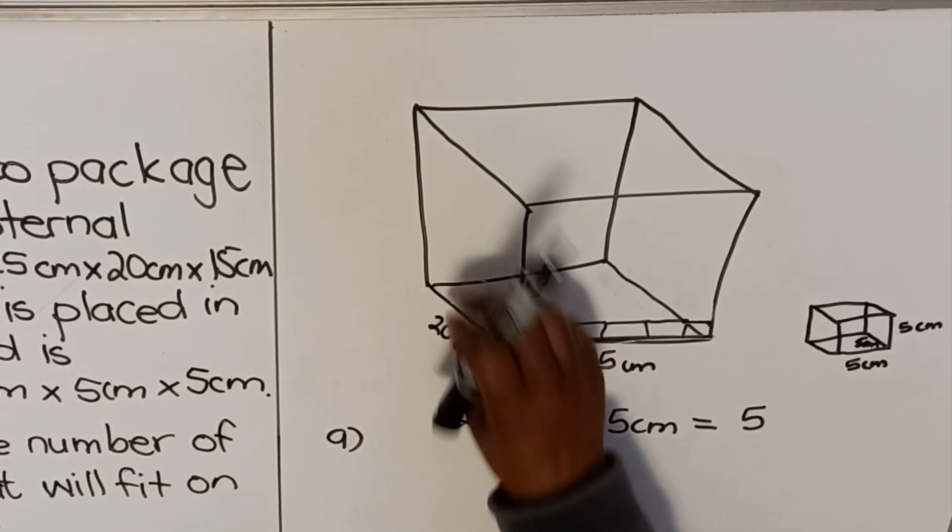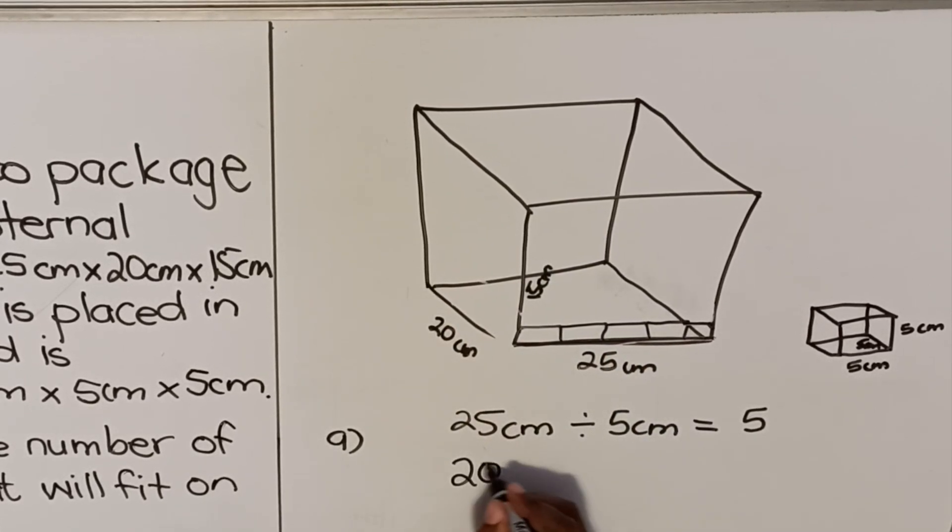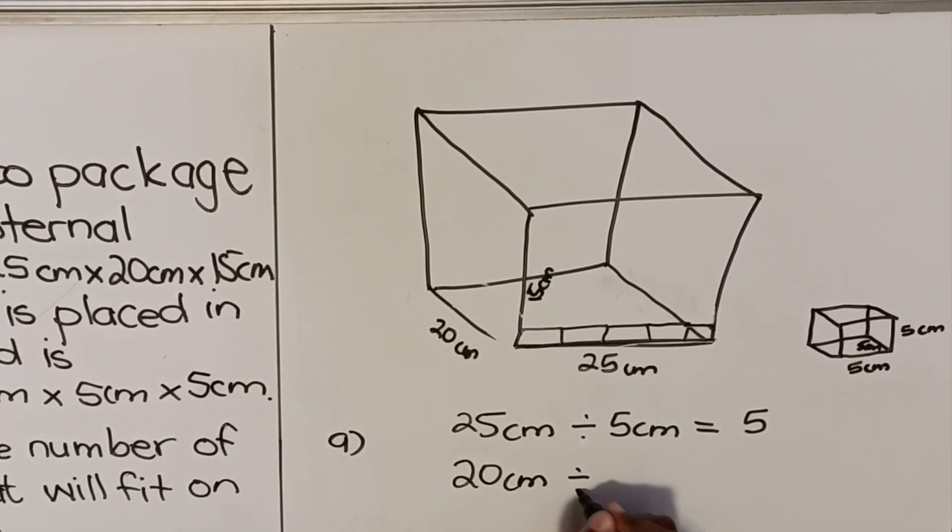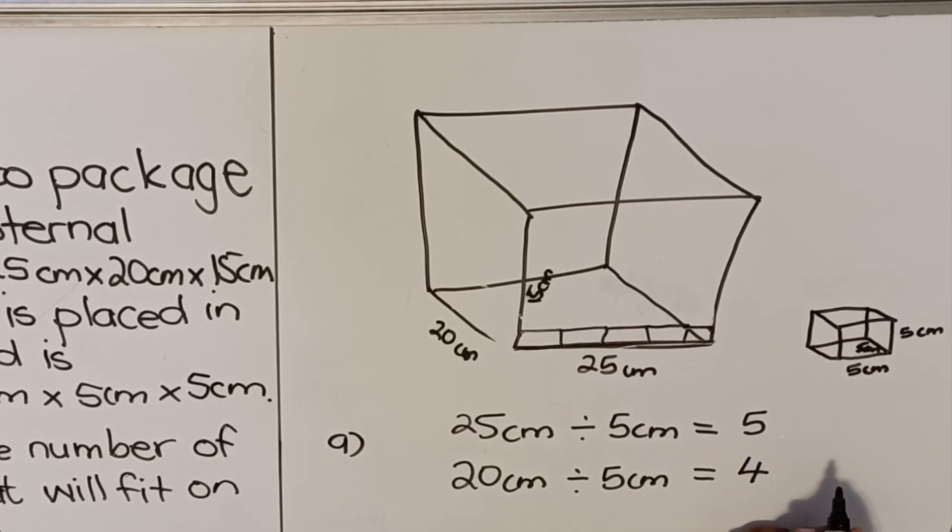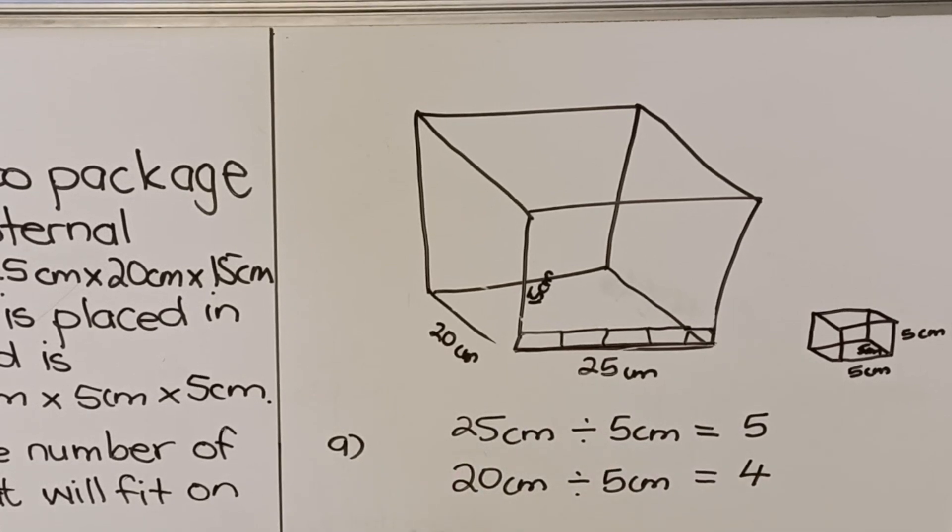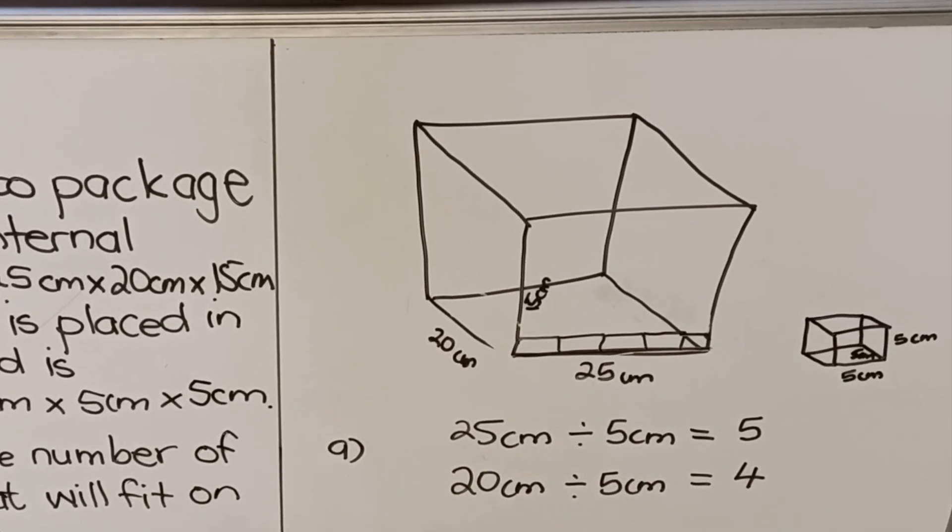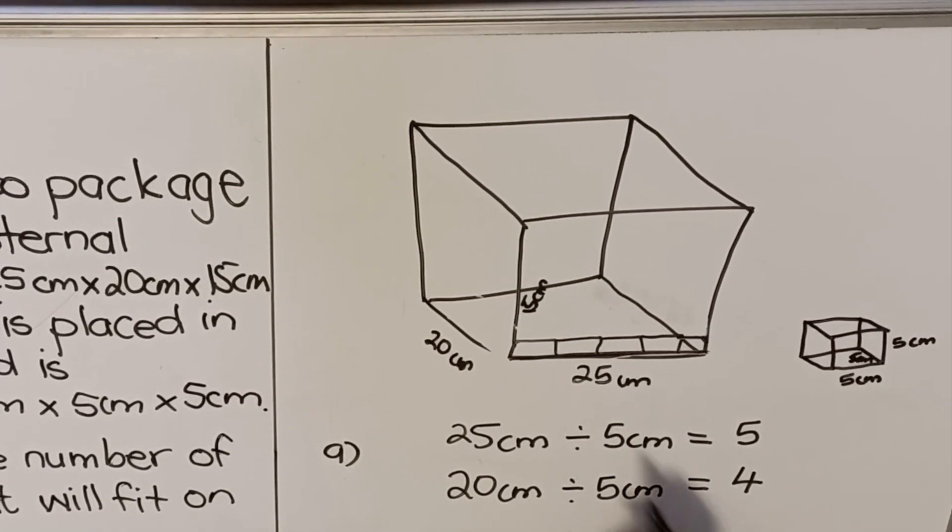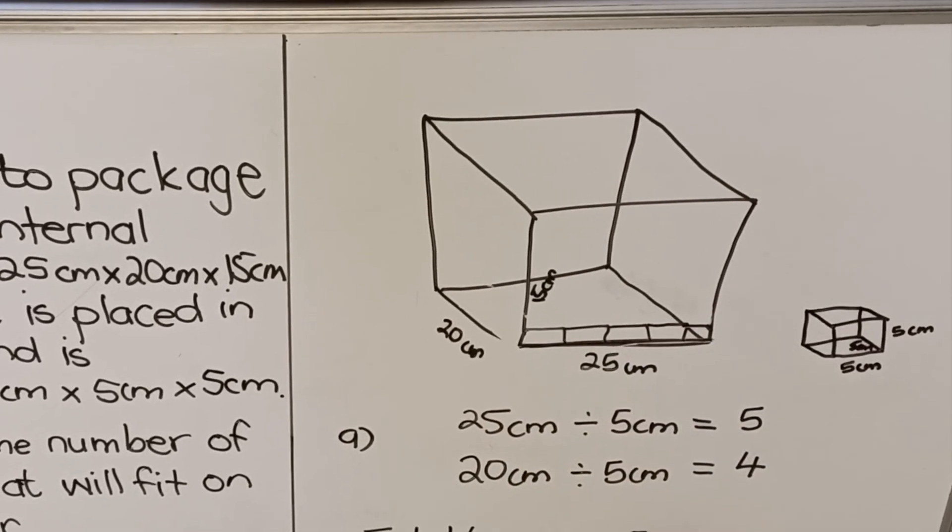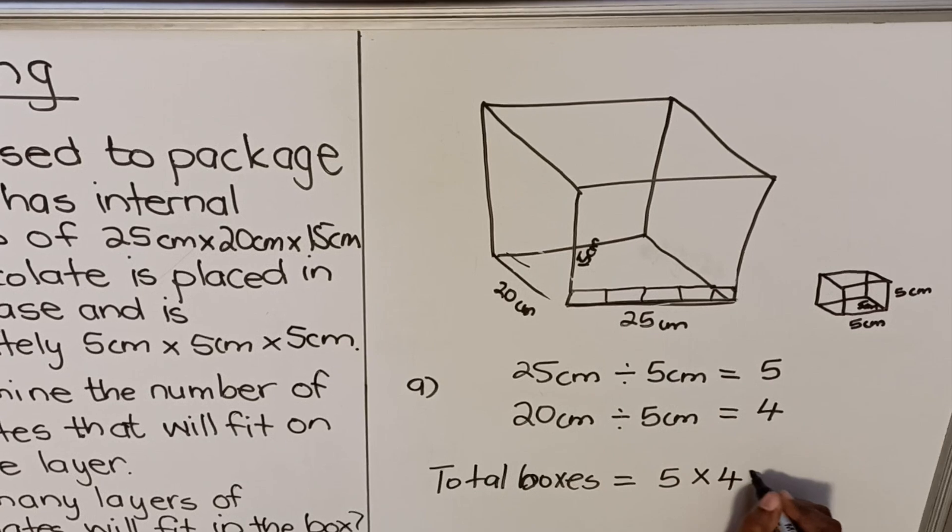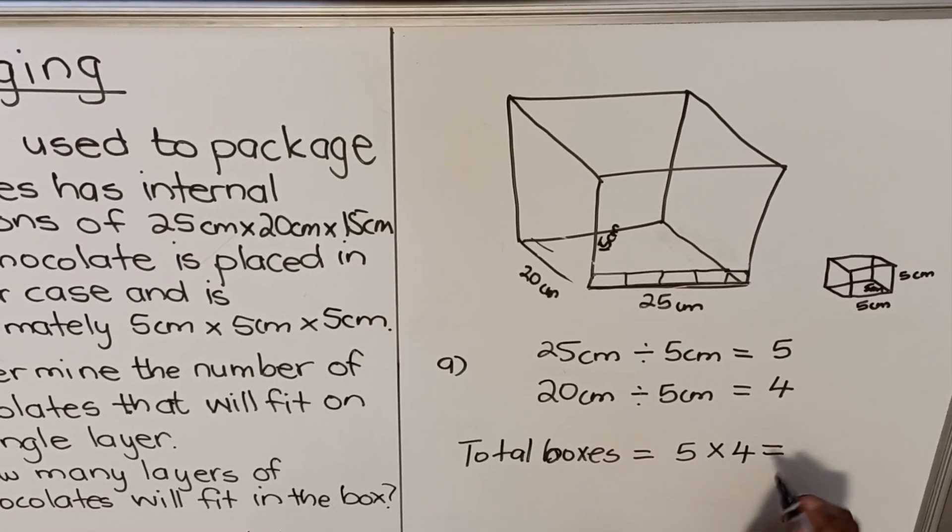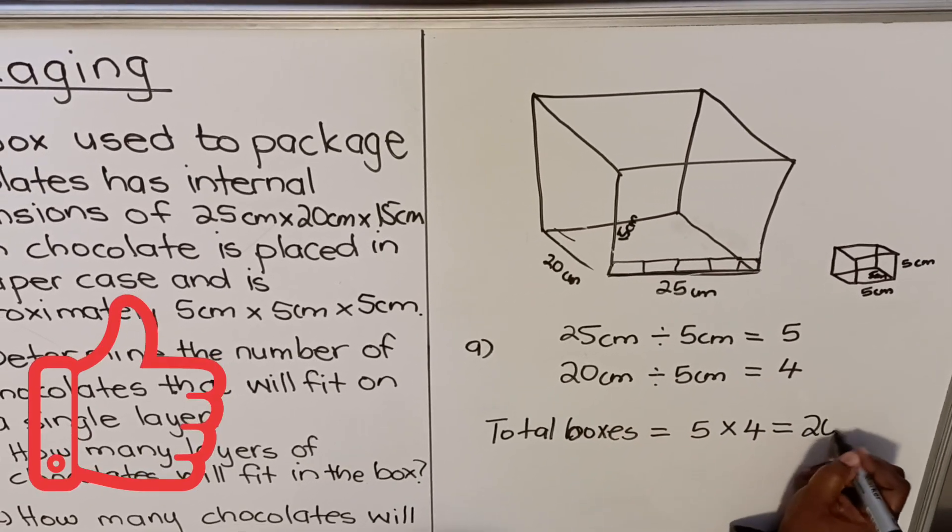And then how many will go across? It's 20 centimeters. 20 centimeters divided by five centimeters, it will be four. So in the bottom layer the total number of boxes will be five of them like that multiplied by four of them going across like that. So it means in my lowest layer I'll have 20 boxes in total.